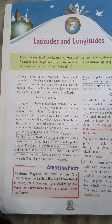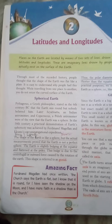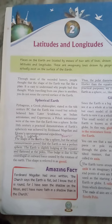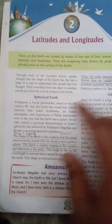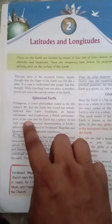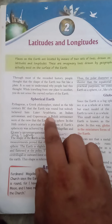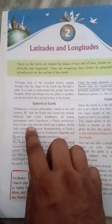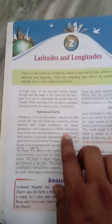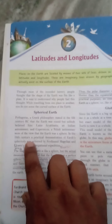The earth was round, but nobody believed it. An Indian astronomer and Copernicus, a Polish astronomer, were of the view that the earth was a sphere. This understanding was achieved by the 16th century.